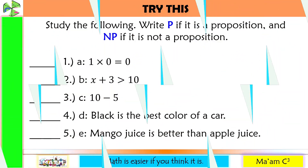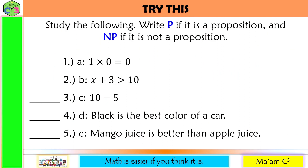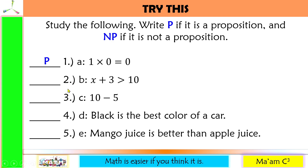Now try this — I have mathematical statements here. Number one: '1 × 0 = 0.' Can we convert this into a declarative sentence? Yes. '1 times 0 is equal to 0' is a declarative sentence, so this is a proposition. Number two: 'x + 3 > 10.' Do you know the value of x? You don't — nothing is mentioned about the value of x. So this statement is not clear if true or false; therefore, this is not a proposition.